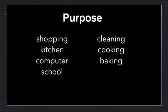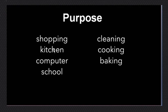Now let's talk about purpose — what is something for? This is a basket; it is a shopping basket because it's for shopping. This is a knife for the kitchen. This is computer paper — we use it for the computer.